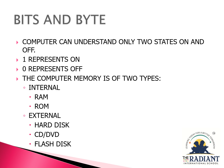Every computer has a certain amount of memory, which determines the number of programs a computer can run at a time. A computer memory is mainly classified into two types: internal memory and external memory. Internal memory is again classified into two parts — RAM and ROM. And external memory is again classified into three parts — hard disk, CD, and flash disk.